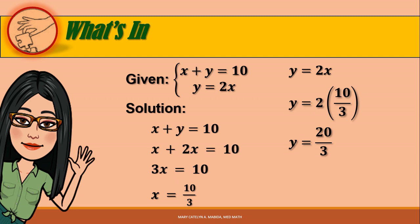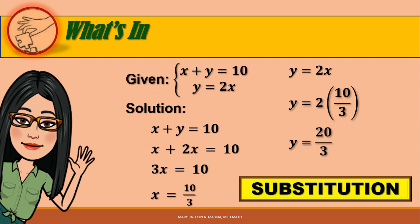Which of the three methods previously discussed was used in this example? Is it the graphing method? Obviously not, because we are not graphing the equations. It should be either elimination or substitution. The correct answer is: we are employing the substitution method in this particular example.